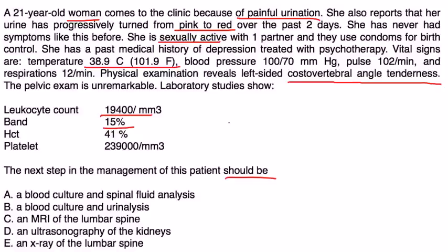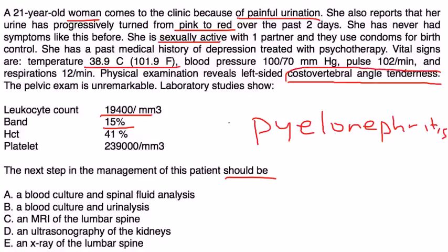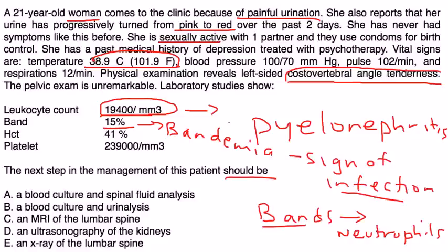She has all the signs and symptoms of pyelonephritis — CVA tenderness, fever, and a high white blood cell count suggesting possible sepsis. She also has bandemia, which for those who don't know is a sign of infection. So there's no doubt she has pyelonephritis. The diagnosis involves a urine analysis and a urine culture — sometimes blood cultures as well. That's why the answer is B.